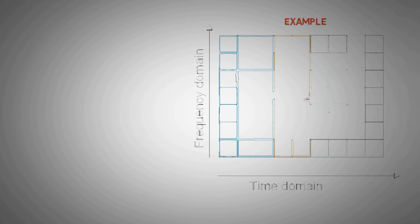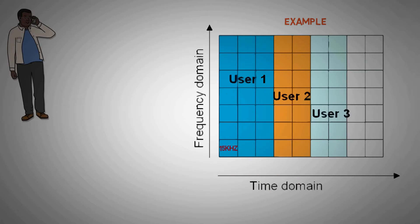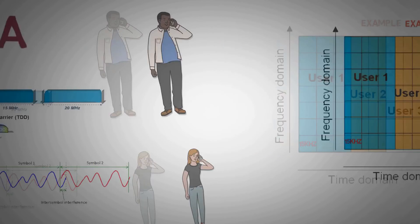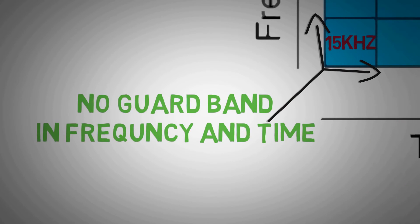OFDMA uses orthogonal subcarriers equally spaced at 15 kHz. Users are provided a subset of these subcarriers for data transmission. Unlike FDMA or TDMA, OFDMA allows the users to access variable bandwidth depending upon the resource availability. Also, since these subcarriers are orthogonal there are no guard bands between them.